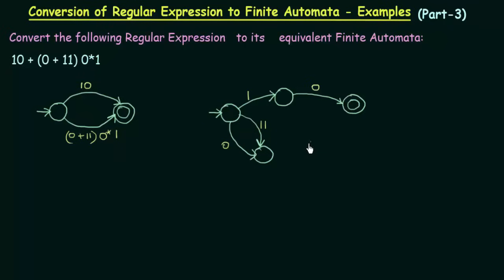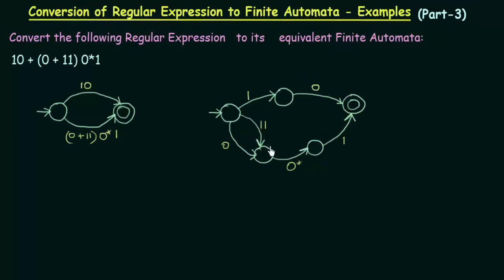Let me make a state here. From this state I will send it to the next state on getting input '0 star', and from that state it will go to the final state on getting input '1'. So we have designed this part also. It is still not complete because we see that here we have two symbols '1,1' and here we have a '0 closure' — we have to expand this further. Only after that can we get the final result.